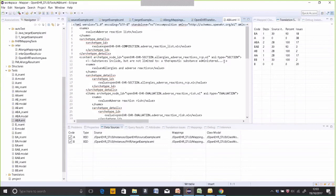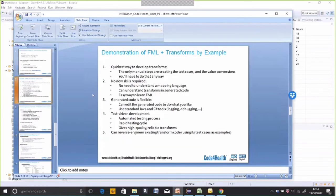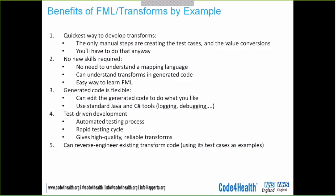Recapping the TBE method: it is a very quick way of developing a transform because you don't develop software — you have to develop good test cases, which you would have to do anyway. There are no new skills required; you don't need to understand a new mapping language. You can understand the generated code in Java, and if you want to learn FHIR mapping language it's an easy way to start. You have the flexibility of the generated code — you can edit it to handle data quality problems — and you can use standard Java tools to trace and debug it.